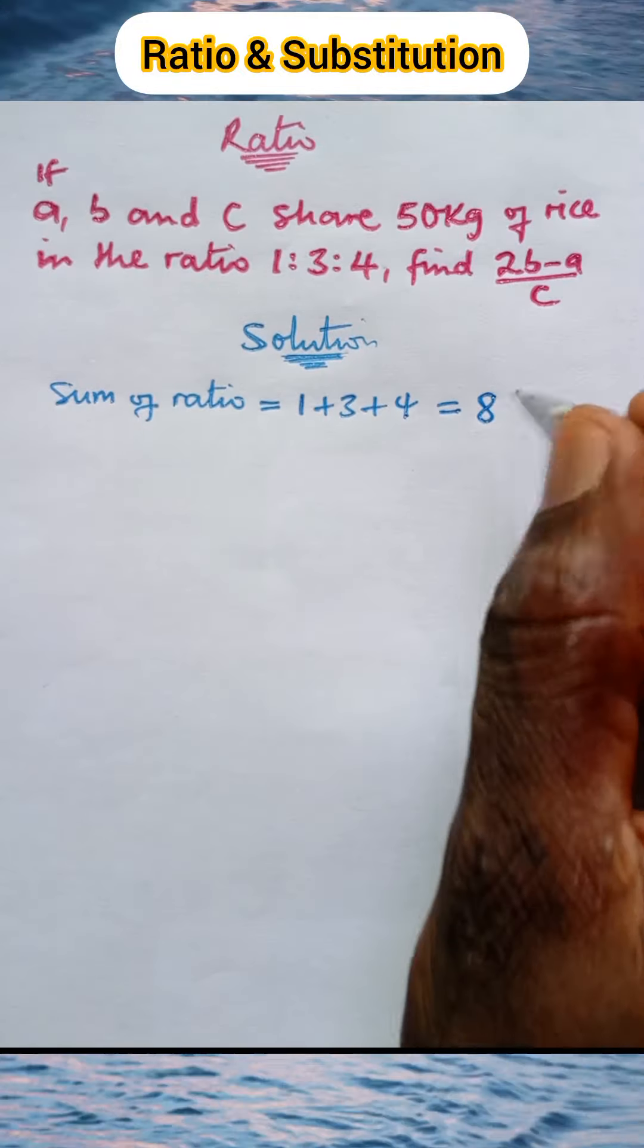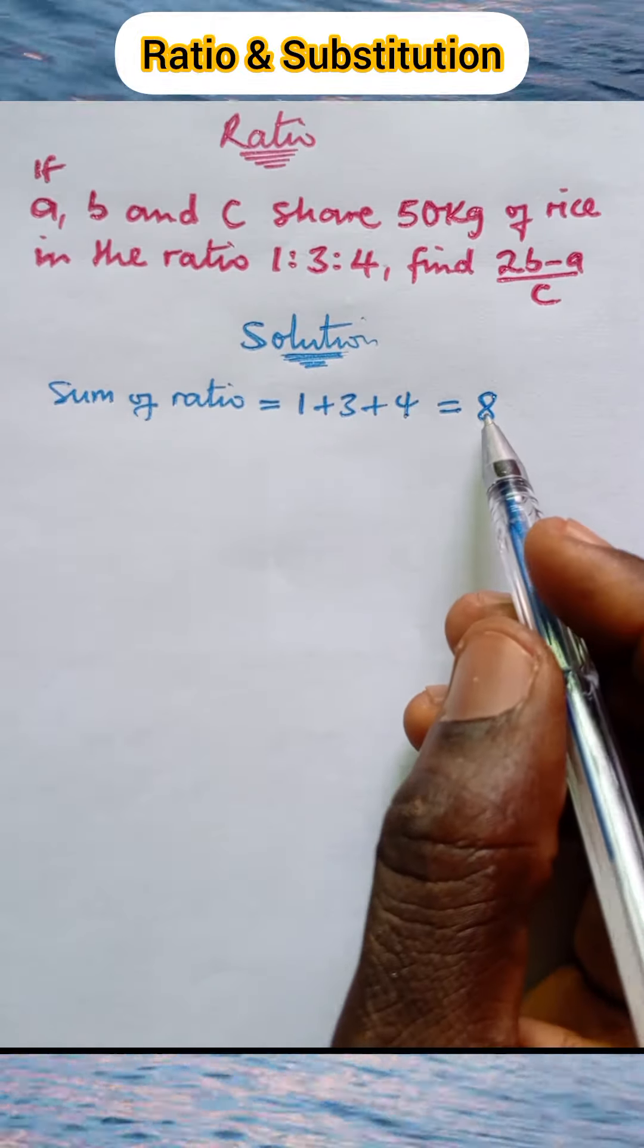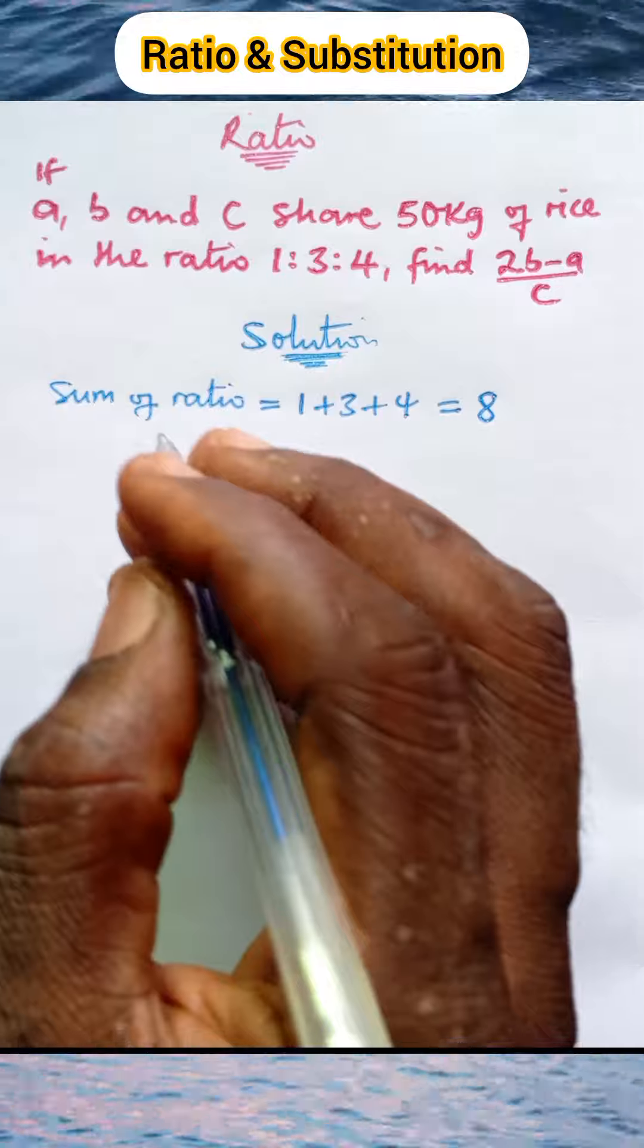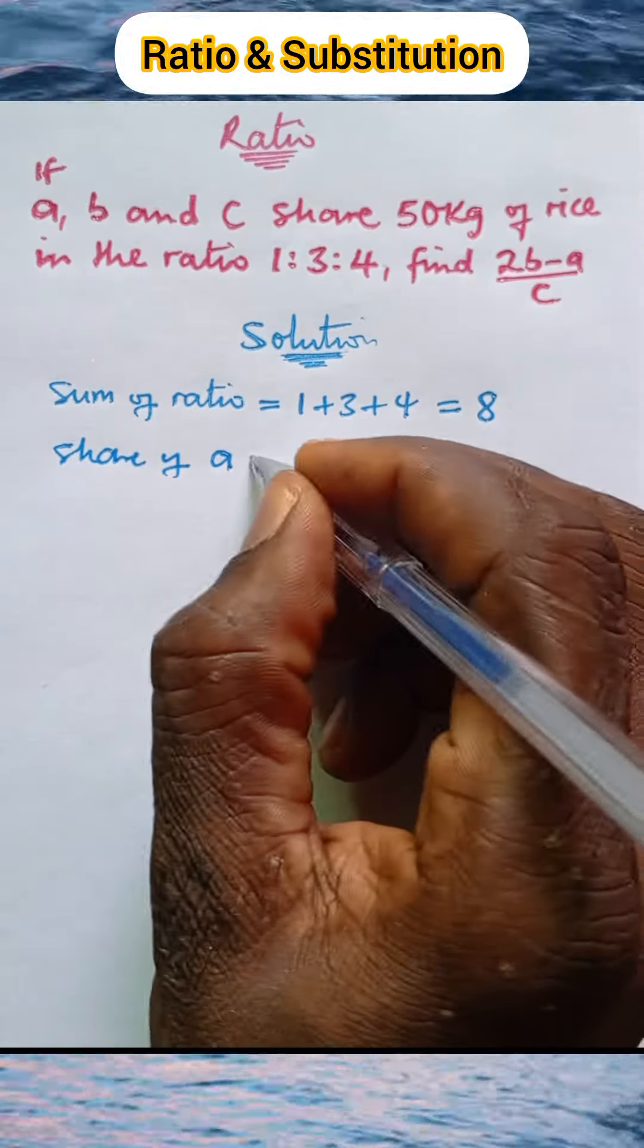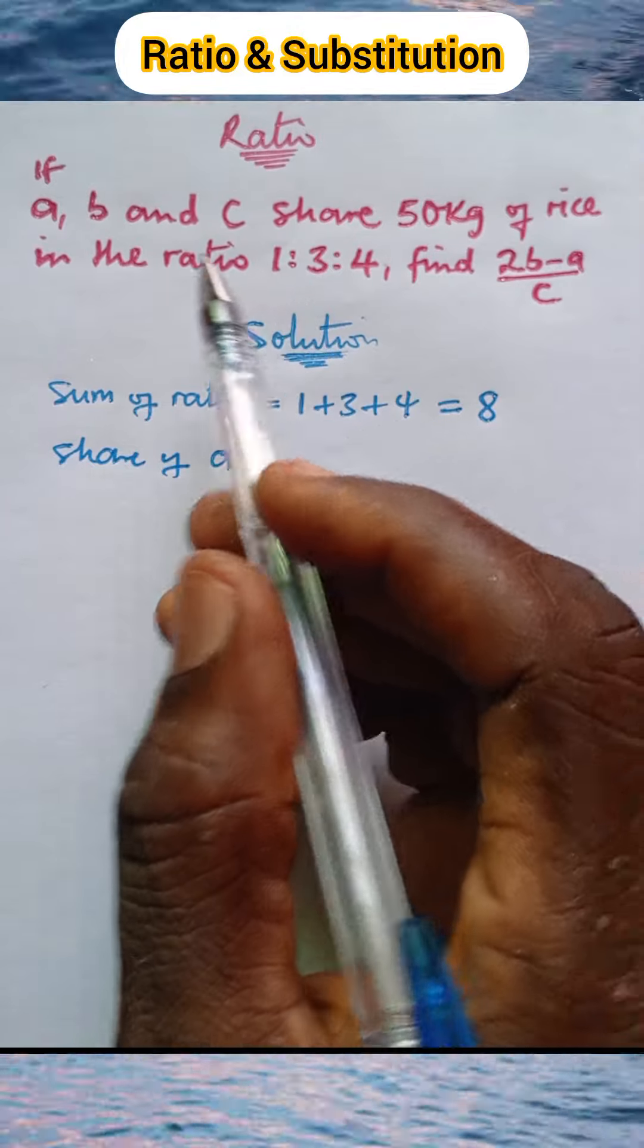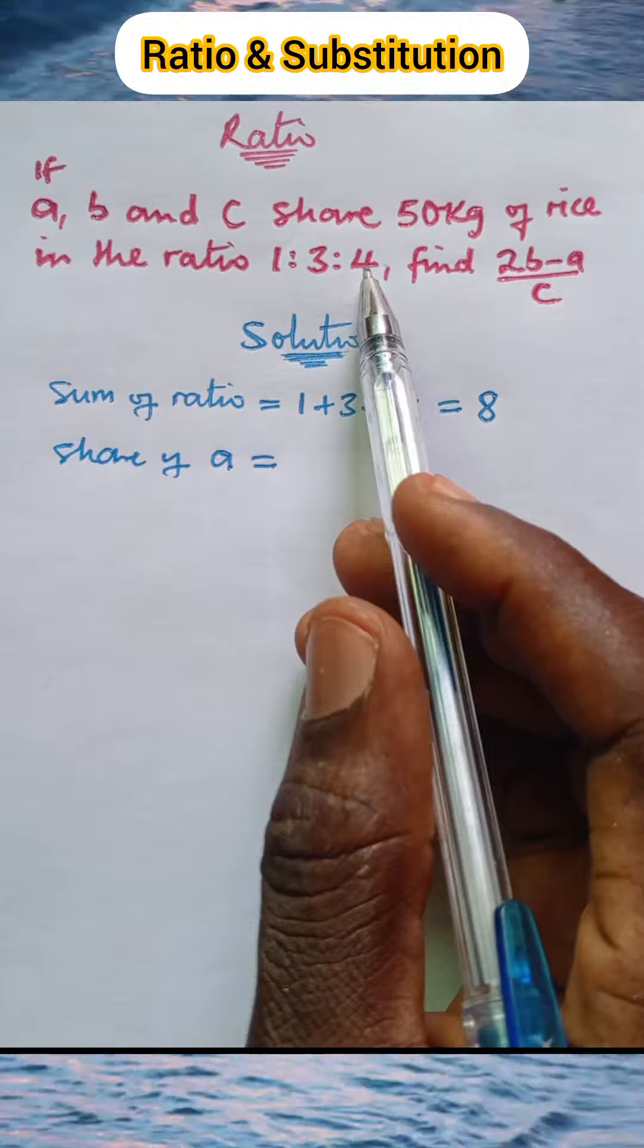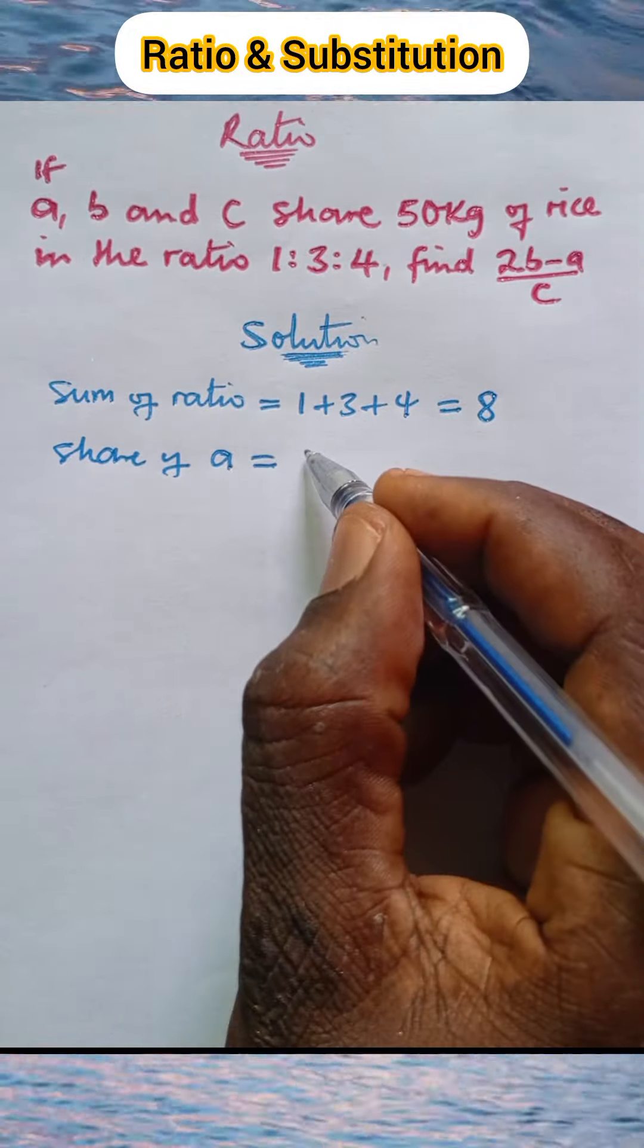Now let's determine the share of rice that goes to each of them. Note that the portion 1 is for a, 3 is for b, and 4 is for c. To get the share of a, it will be the portion of a, which